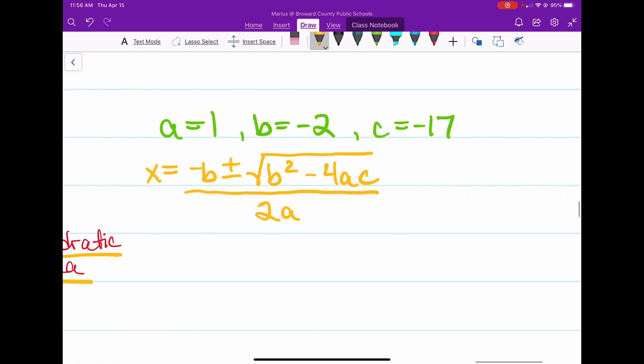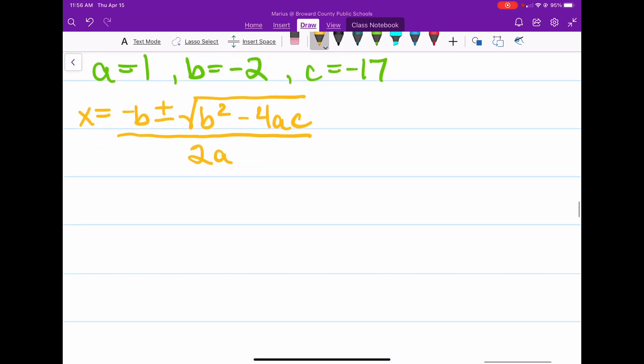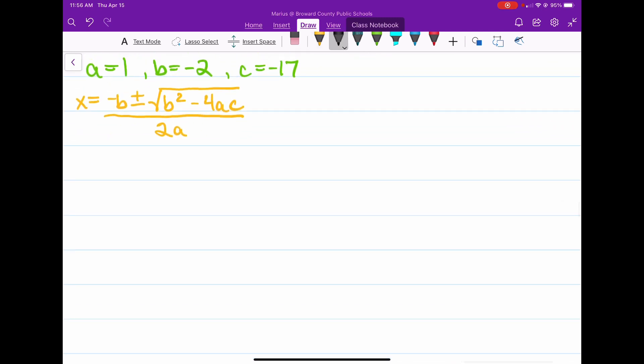So now, now that we know all the values, we can go ahead and plug these in and begin to work this stuff out. So x equals negative, and then what's b? b is negative 2. Plus or minus the square root of b squared. b is negative 2 and we've got to square it, minus 4 times a times c. a is 1, c is negative 17. And all of that is going to be divided by 2a, or 2 times a. a is 1.